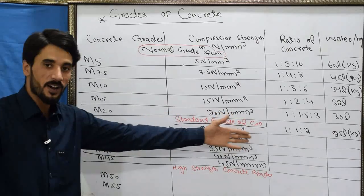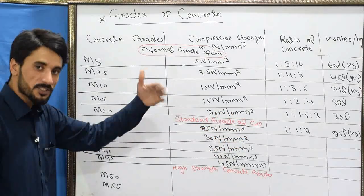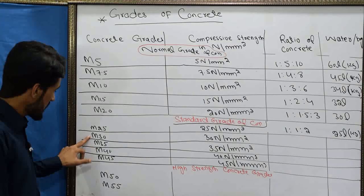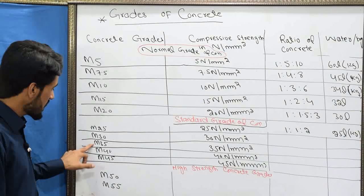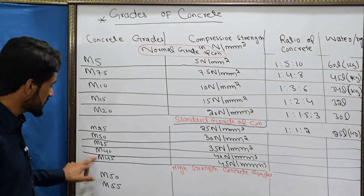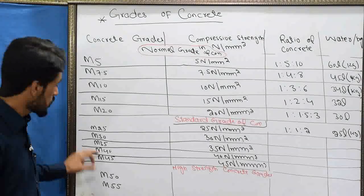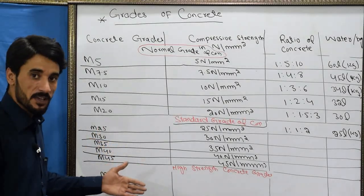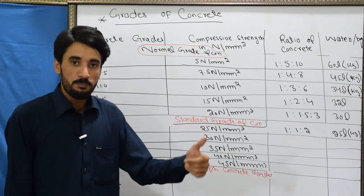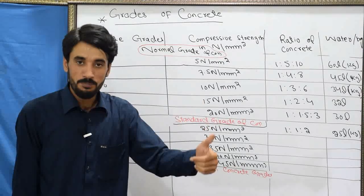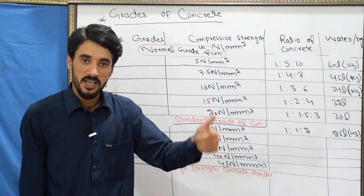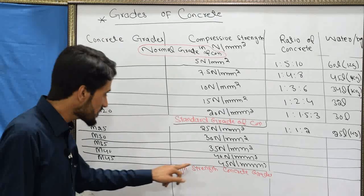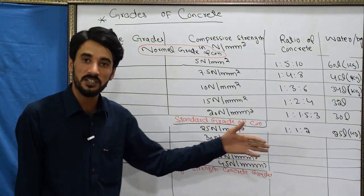Standard grade of concrete is subdivided into five groups: M25, M30, M35, M40, and M45. Above M45 — meaning M50, M55, M60, M65, up to M100 — these are high strength concrete grades.